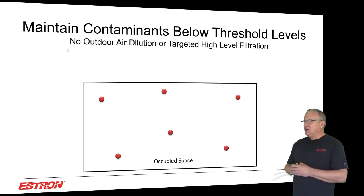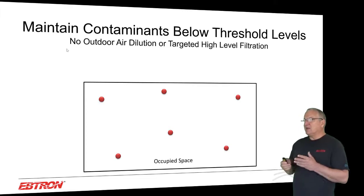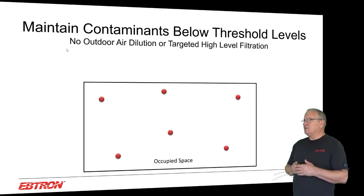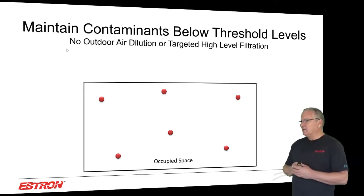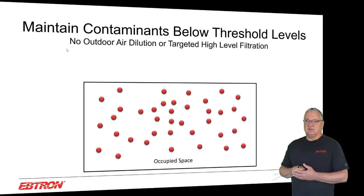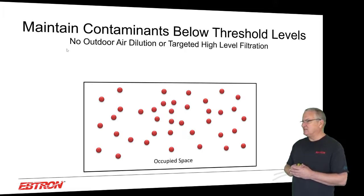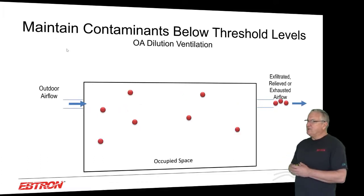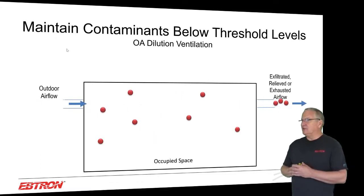In an occupied space, those red circles represent some type of contaminant — they could be COVID. You'll most likely go into a space and there will be some level of contaminants already there. If we have no outdoor air for dilution or any kind of targeted high-level filtration that can actually remove the contaminant, the contaminant level will just continuously increase. This is really the case today with COVID, particularly in residences, because we have no real requirements for outdoor dilution ventilation and very poor filtration in residences.